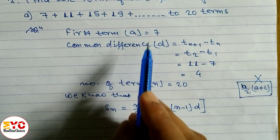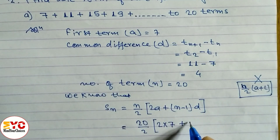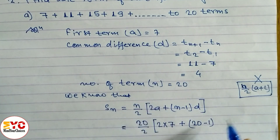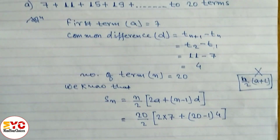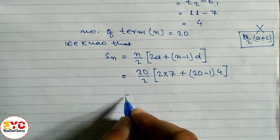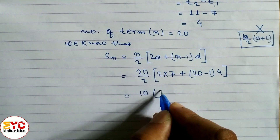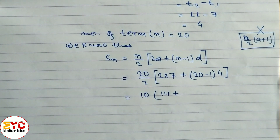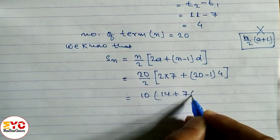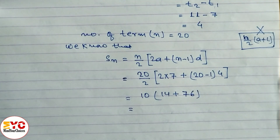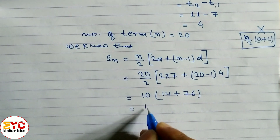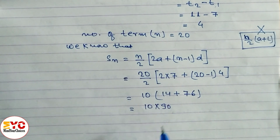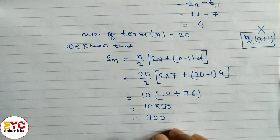Solving: 20/2 gives 10. Then 2 × 7 = 14. Then 20 − 1 = 19, and 19 × 4 = 76. Adding 14 + 76 = 90. Finally, 10 × 90 = 900. So the sum of 20 terms is equal to 900.